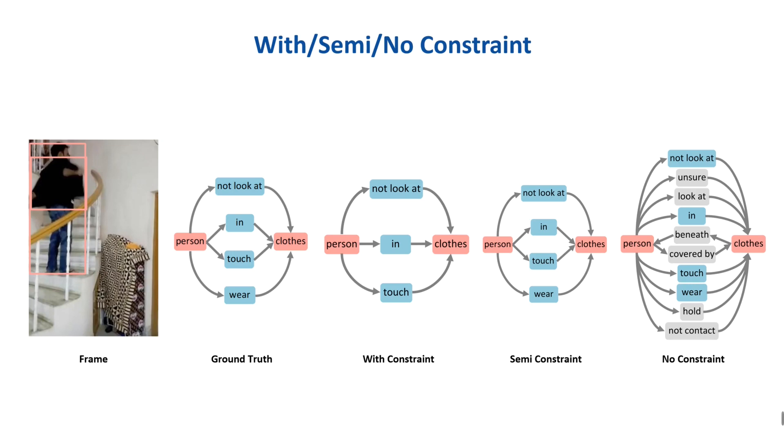Allowing a pair to have multi-predicates, such as person-in-clothes and person-touch-clothes. The predicate is regarded as positive only if the corresponding relationship confidence is higher than the threshold.